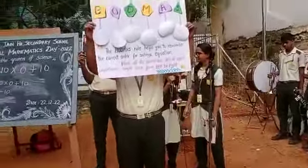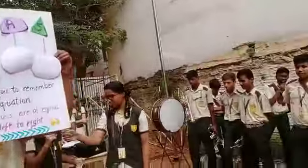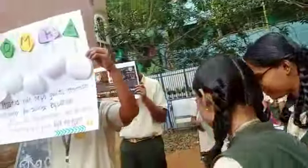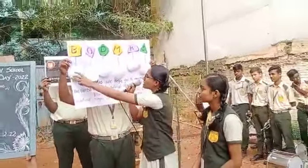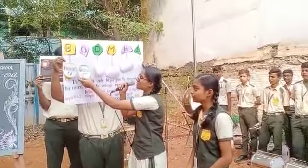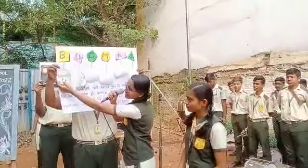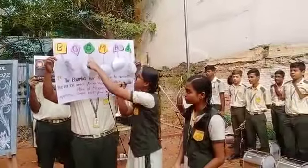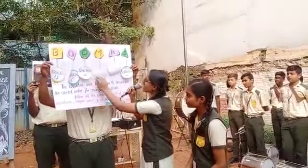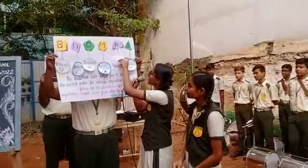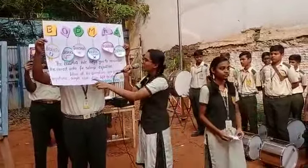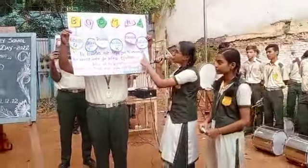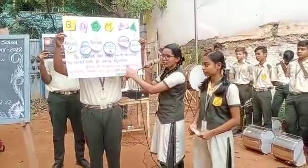Let us explain to you all BODMAS. You can see here BODMAS. So B stands for Brackets, O stands for Orders — brackets in the sense the brackets you can see over here. D stands for Division, M stands for Multiplication, A stands for Addition, and S stands for Subtraction. So the BODMAS rule helps you to remember the correct order for solving equations.